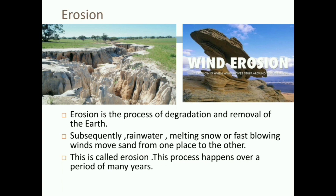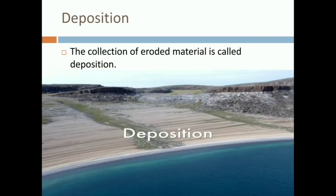Rain, lightning and thunder along with winds and storms cause them to break further into finer particles. This process happens over a period of many years. Now, deposition. Deposition is also called the process of aggradation. In this process, eroded material like debris and finer particles of sand are moved by wind, waves and rain, and they keep getting accumulated in one place. This collection of eroded material is called deposition.